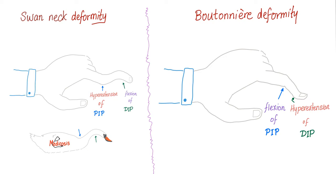Contrast to that, we have Boutonnière's deformity — the exact opposite: hyperextension of the DIP and flexion of the PIP. Please don't say extension — extension is normal. This is hyperextension because it's a pathology: a subluxation, an erosion, a sign of inflammation.